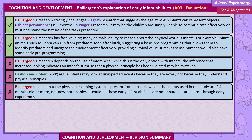Evaluations. Baillargeon's research strongly challenges Piaget's suggestion that the age at which infants can represent objects is eight months. In Piaget's research, it may be that the children are simply unable to communicate effectively or misunderstand the nature of the task presented. Baillargeon's research has base validity — many animals' ability to reason about the physical world is innate. For example, infant animals such as zebras can run from predators soon after birth, suggesting a basic pre-programming that allows them to identify predators and navigate the environment effectively, providing survival value.